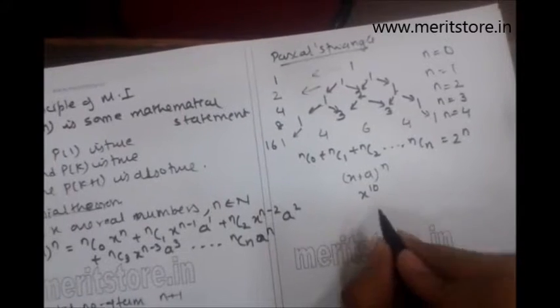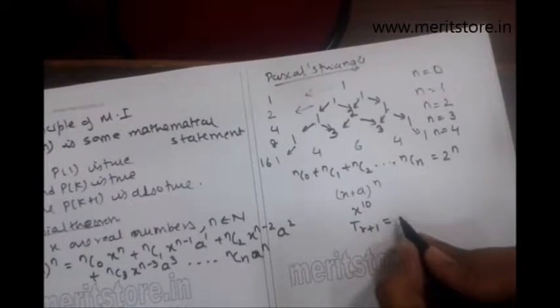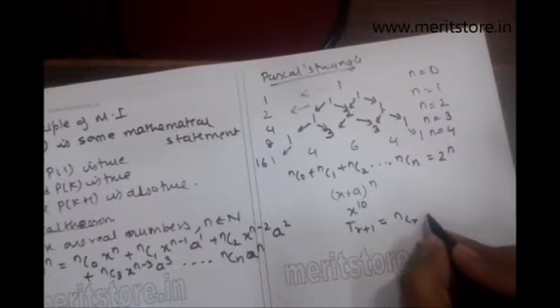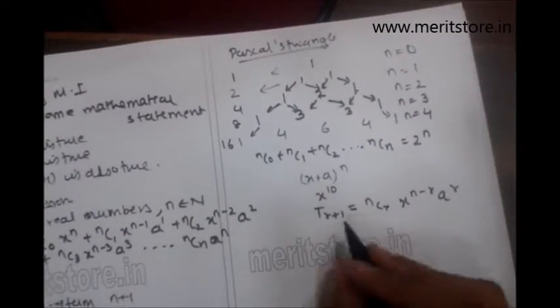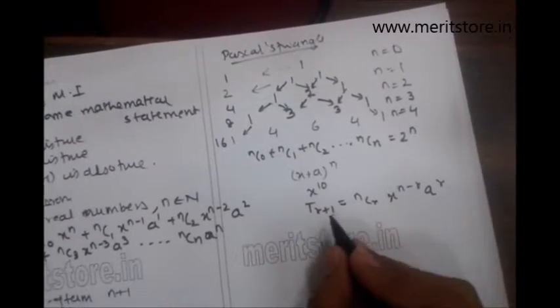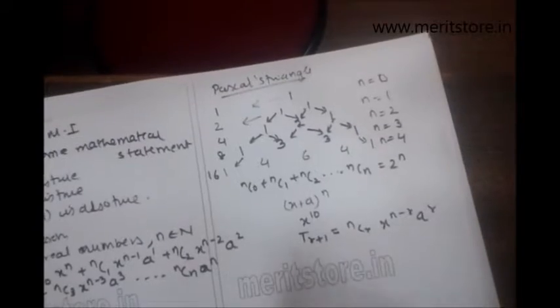For questions like these, there is a general formula. The formula says t r plus 1 equals ncr, x raised to n minus r, a raised to r, where r is the term that has been asked to find. For example, x raised to 10, so your r here is 10.